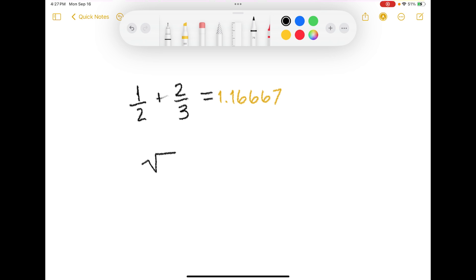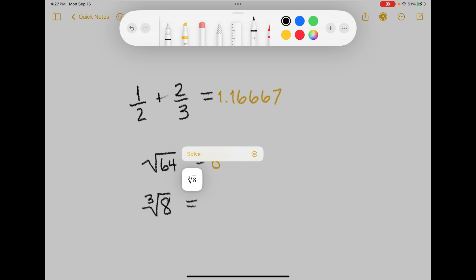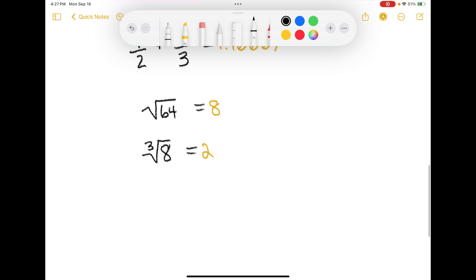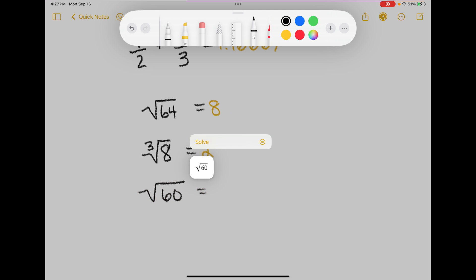Same thing if I did the square root of 64, it knows that that is 8. But if I did the cubed root of 8, does it recognize? Oh it does. That's pretty cool. But if I were doing something like the square root of 60 it would give me a decimal here.